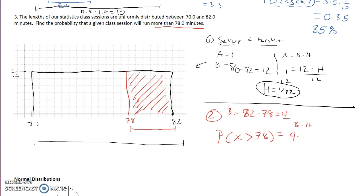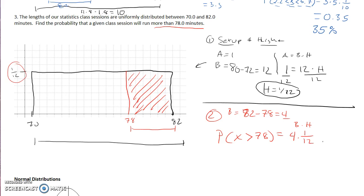So to find the probability that a class session will run longer than 78 minutes, we use greater than for that - it's going to be base times height. My base I just found was 4 times the height of my probability distribution is given right here at 1 over 12.